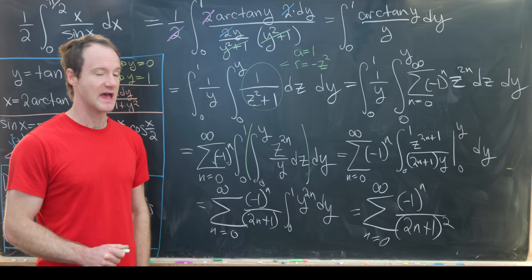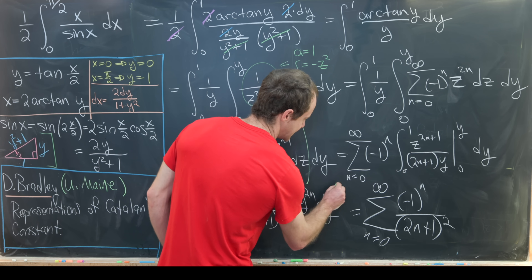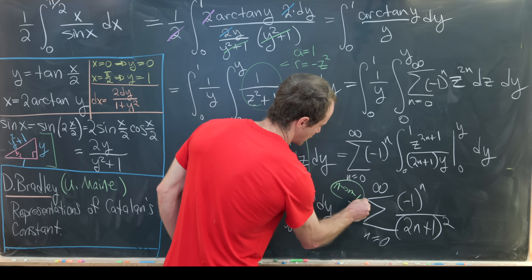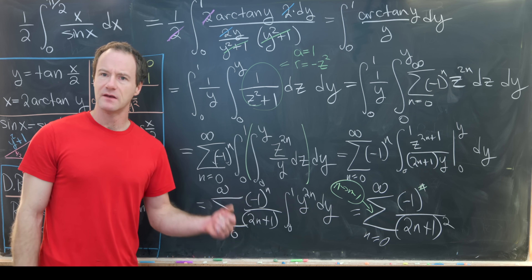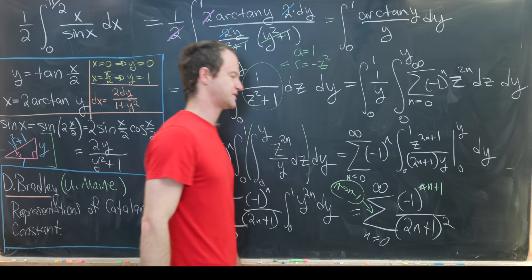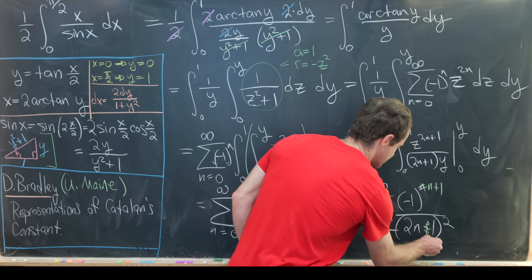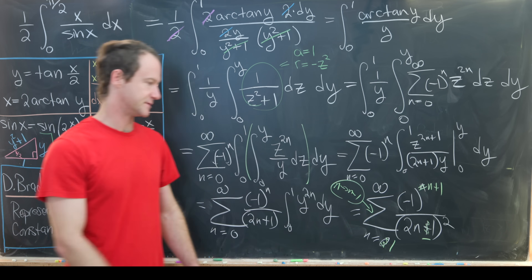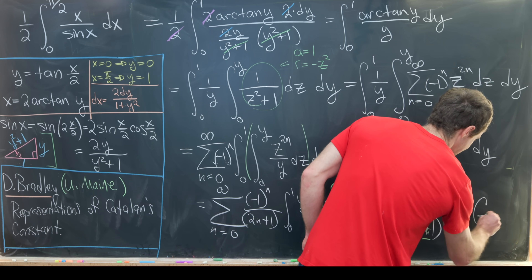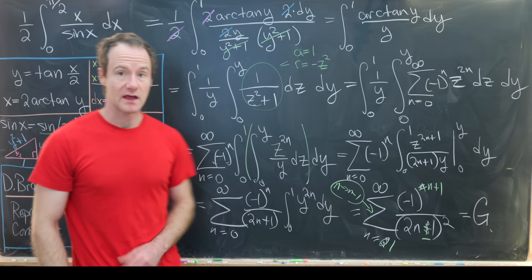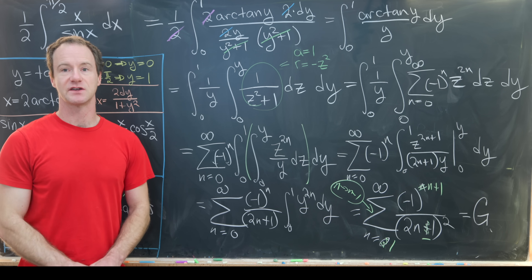To match the standard form of Catalan's constant, we re-index by replacing n with n − 1. Since n − 1 and n + 1 have the same parity in the exponent of −1, we can use (−1)^{n+1}, and the 2n+1 term becomes 2n−1, with the sum starting at n = 1. This is exactly the definition of G, Catalan's constant. So we have shown that the integral from 0 to 1 of arctan(y)/y dy equals Catalan's constant — which is our goal. And that's a good place to stop.